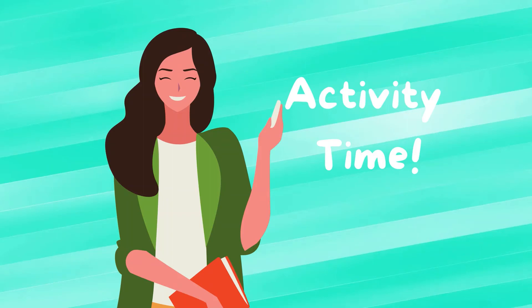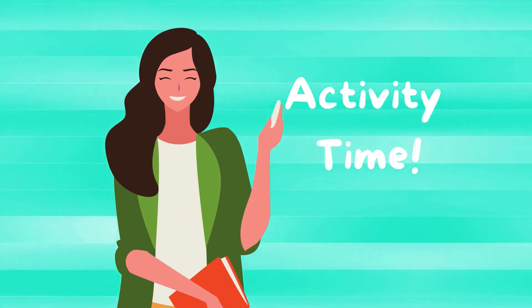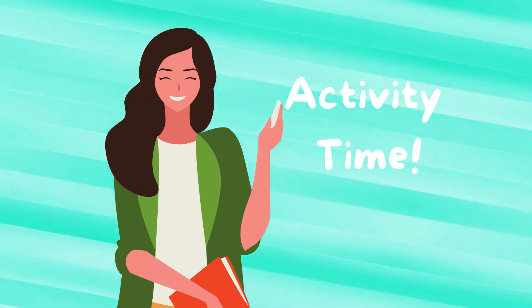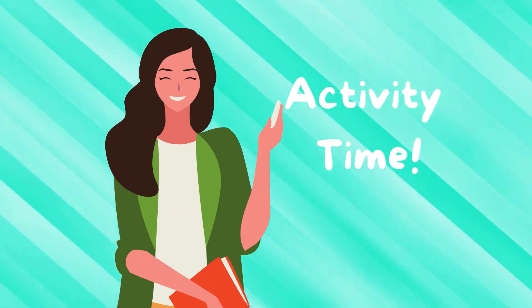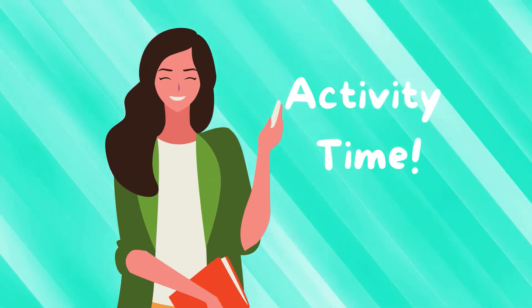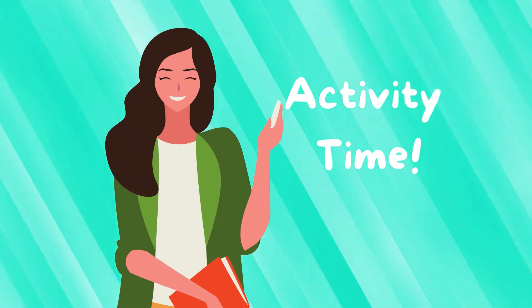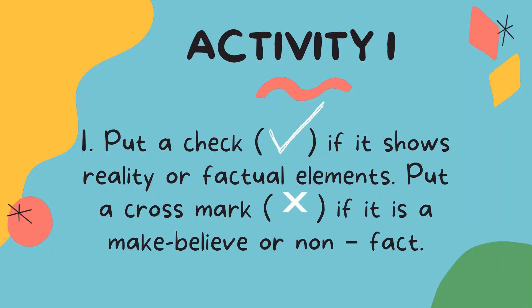Now let's do this activity because it's activity time! Our first activity tells us to put a check mark if the image shows reality or factual elements, and put a cross mark if it is make-believe or non-fact.